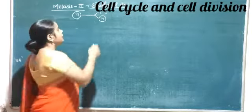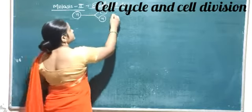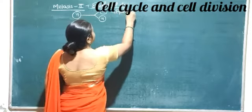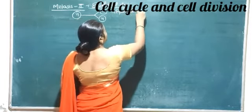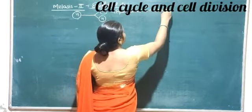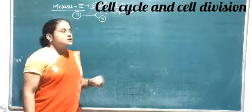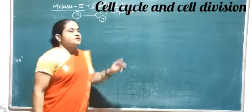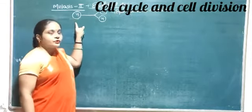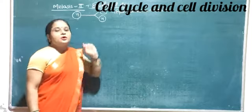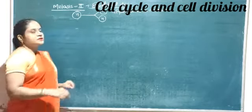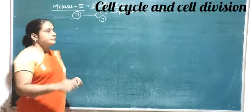When we talk about Meiosis II in detail, we can say that it is equivalent to mitosis. It is equivalent to mitosis because in mitosis, equational division always takes place, either from N to N cells or 2N to 2N cells. So let me start with the different phases of Meiosis II.